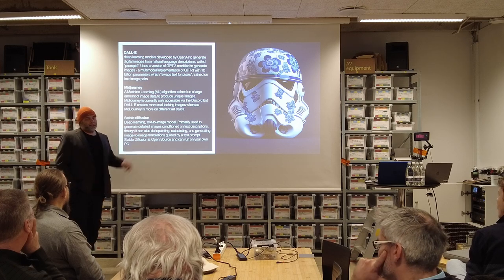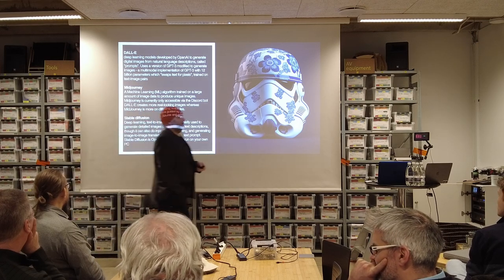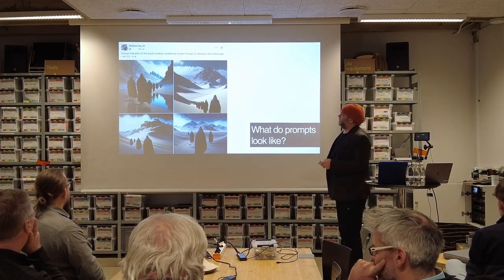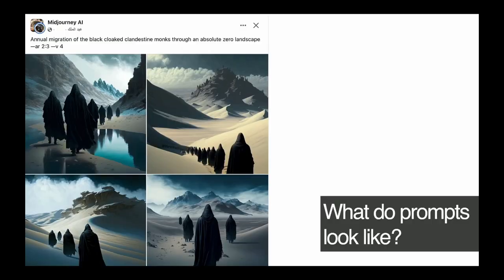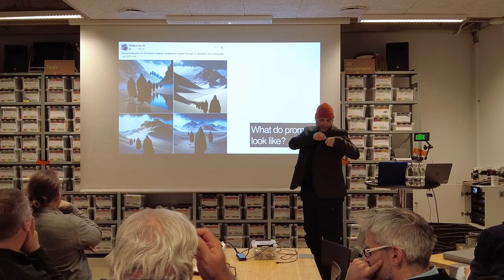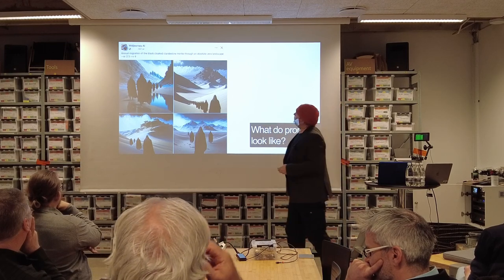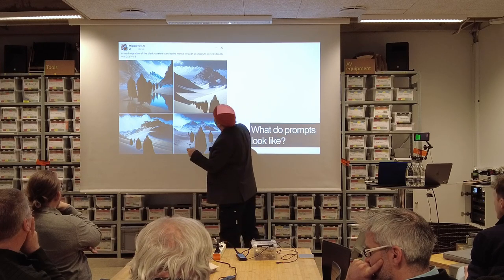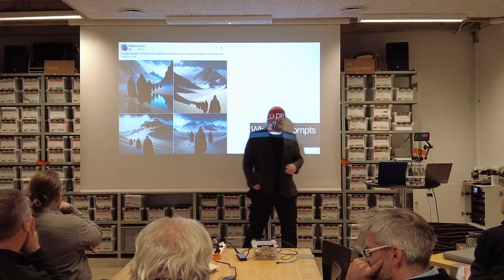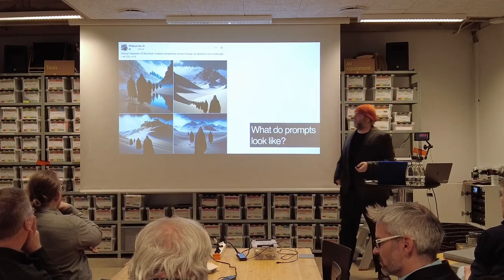Stable Diffusion is the only one that can actually help you in a way — you can ask it to colorize something you've drawn yourself, stuff like that. What did this prompt actually look like? Well, here's an example. Mid-Journey has generated four pictures from this prompt: 'Annual migration of the black cloaked clandestine monks through an absolute zero landscape.' Aspect ratio two to three, version four of Mid-Journey. That's what a prompt can look like.